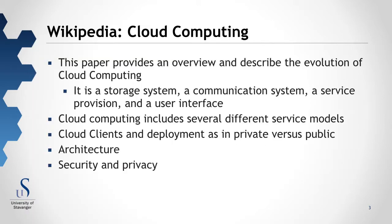The Wikipedia paper provides an overview and describes the evolution of cloud computing. Cloud computing, as seen here, is a storage system, communication system, a service provision, and a user interface. The main point is that it takes care of our data on our behalf and makes it available to us. Cloud computing includes different service modules, and we look at how cloud clients and deployment can be done — including private versus public application of clouds.